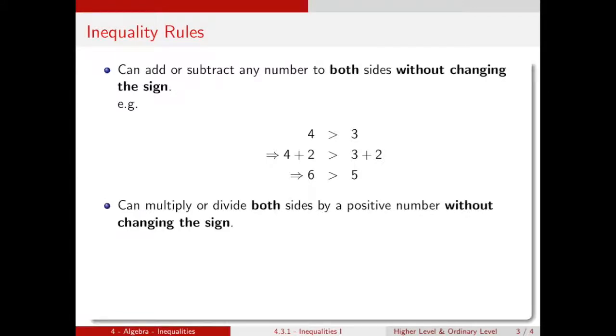Secondly, we can multiply or divide both sides by a positive number without changing the sign. So for example, 6 is less than 8. We can multiply both sides by 2. 2 times 6 is less than 2 times 8. And then 2 times 6 becomes 12, 2 times 8 is 16, and we have 12 is less than 16, which again is true.